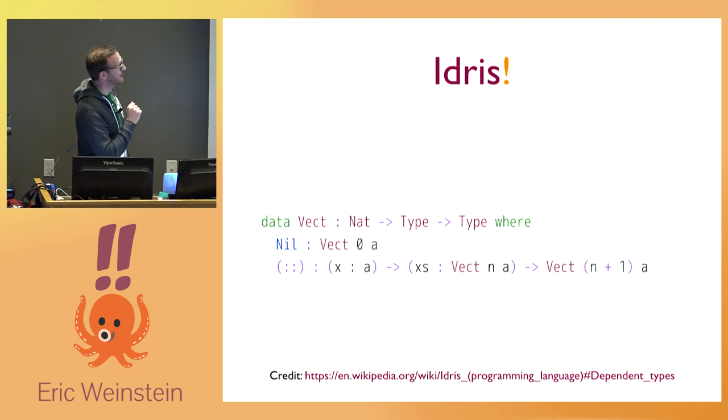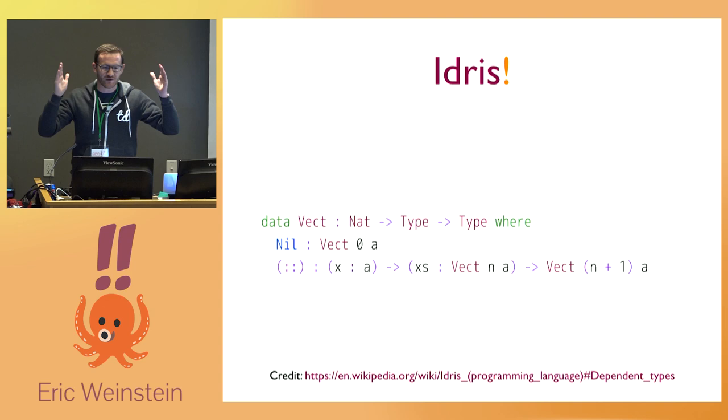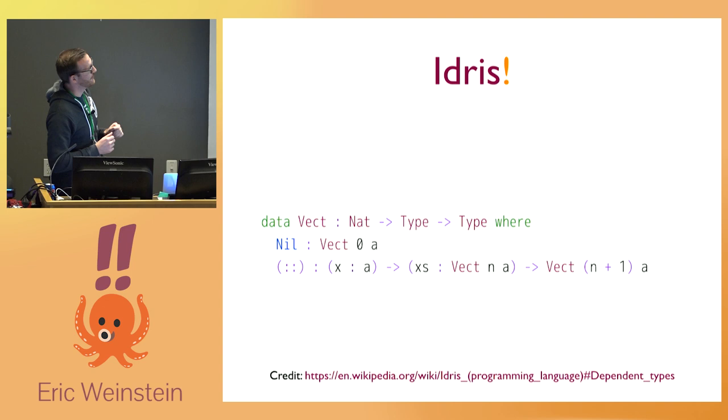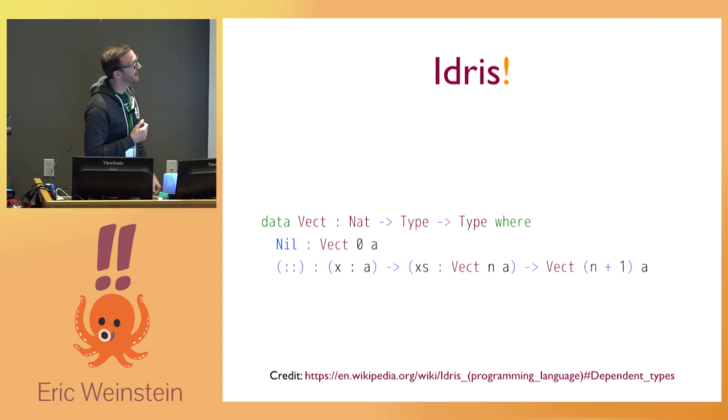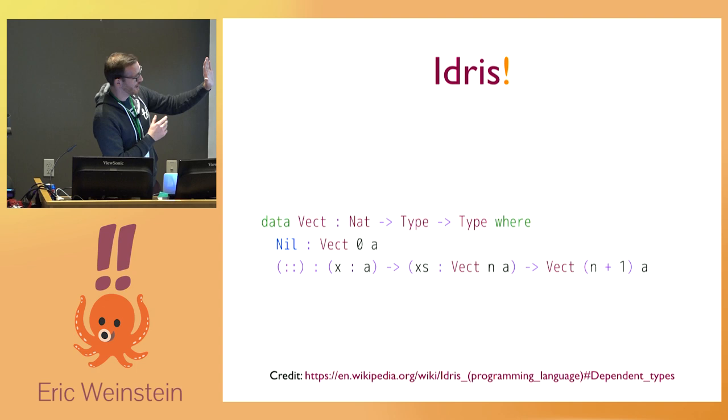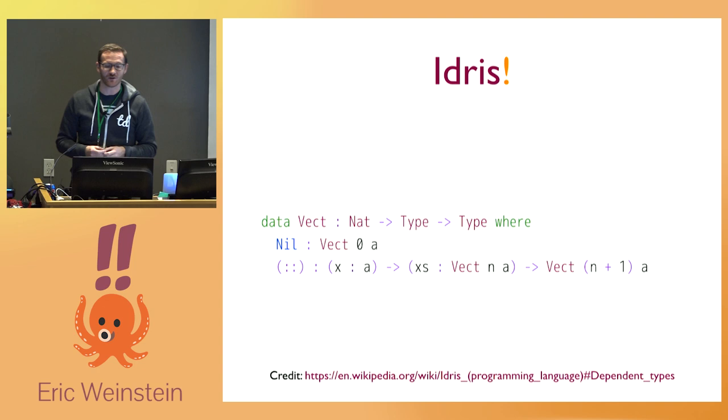So this is a vector. In this case we basically have a sequence of a defined length. To help you read this: data Vector takes a natural number and a type and gives you a type. If you have nil, you have the empty vector of A — length zero. Otherwise, you have an element x of type A and more x's which are a vector of length n of type A, and if you add this x to the existing list you get a vector of length n+1. The cool thing is you have a type that actually tells you how many items are in your vector.